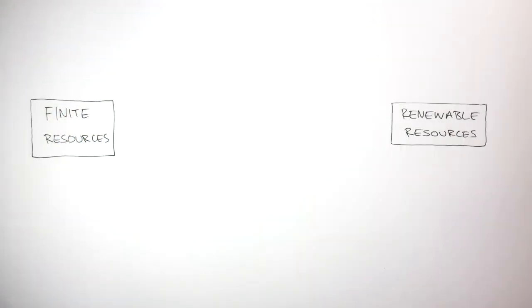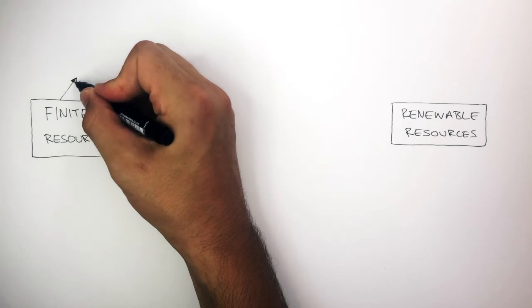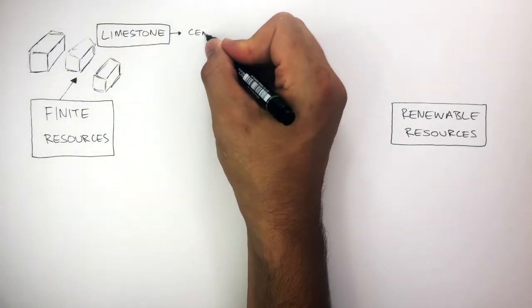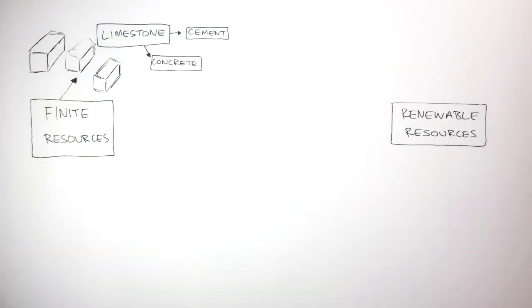We're now going to compare specific examples of finite resources and renewable resources. An example of a finite resource is limestone. Limestone can be used to make cement and concrete. There's a limited supply of limestone in the world, and it takes millions of years to form. So as we use up limestone, it would take millions of years to form limestone again, which is why it is a finite resource.